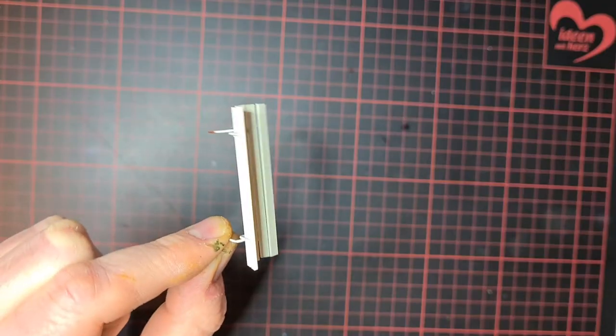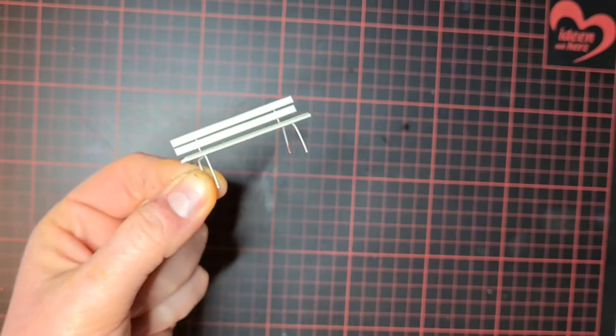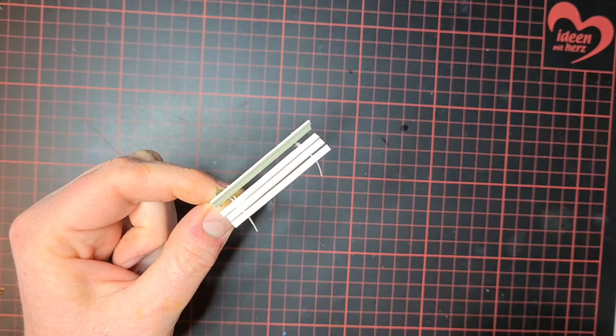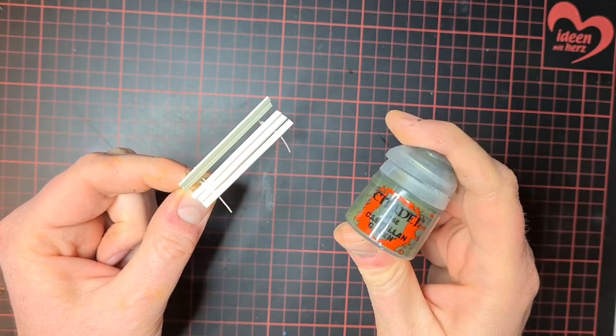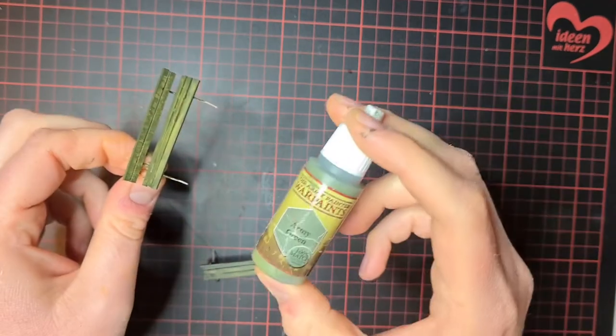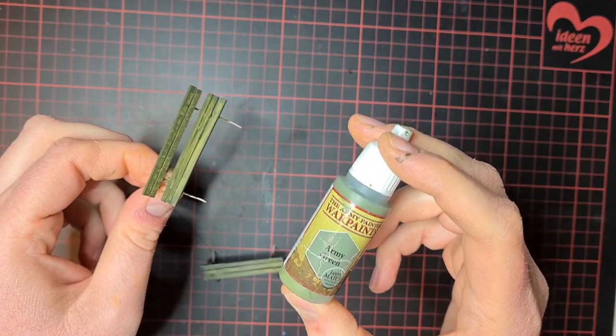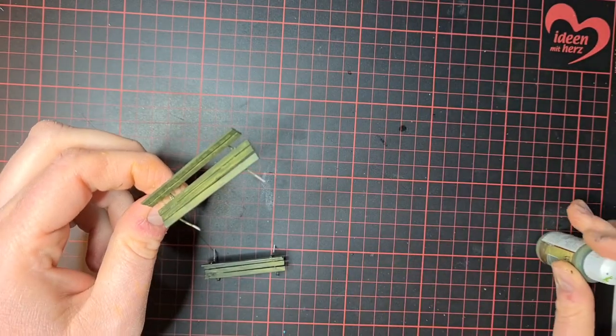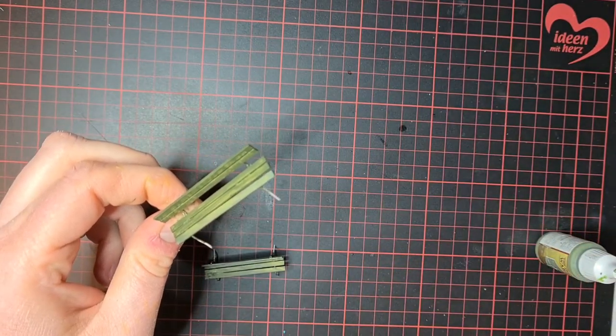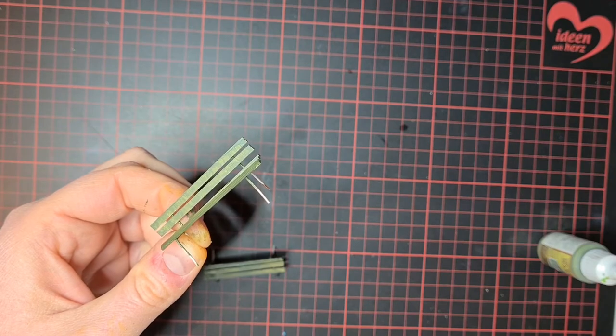I've base coated the bench using spray paint from Games Workshop, and now I'm going to paint the wooden parts Castellan Green. Now I'm going to dry brush using Army Green from Army Painter, and then I'll paint the metal parts using various brown colors to make it rusty.